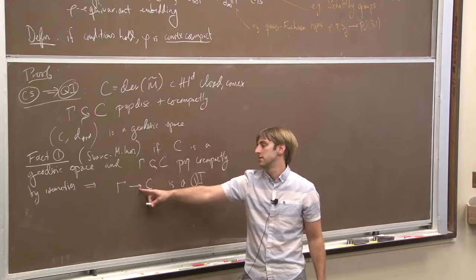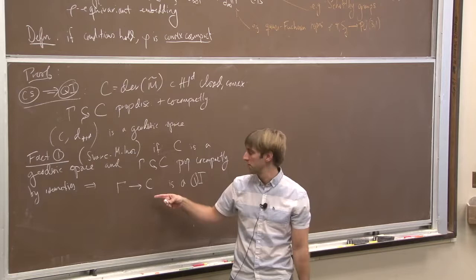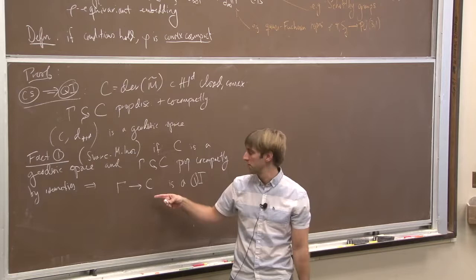This is an extremely useful lemma in geometric group theory. In particular, it gives us that condition QI holds. What about the finite generation? Well, what this really means is there is some generating set of gamma determined with respect to a fundamental domain in C for this action for which this is true. So that was easy.